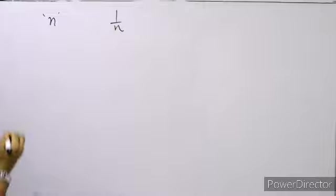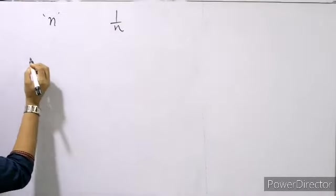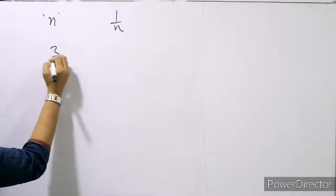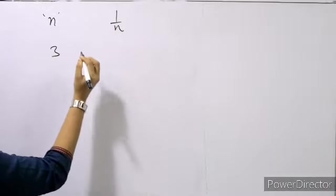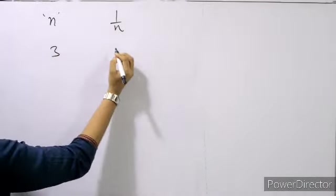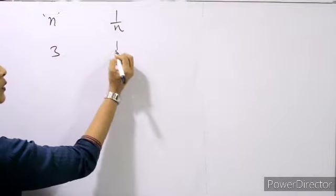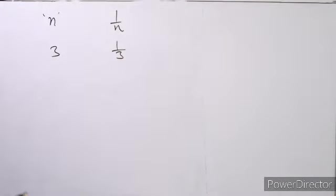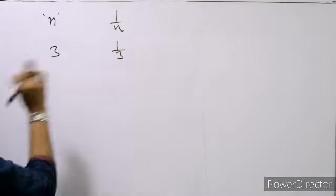We can take one example. If 3 days are needed to complete a work, then how much work will be done in 1 day? 1 by 3. One third of the work will be done in 1 day.